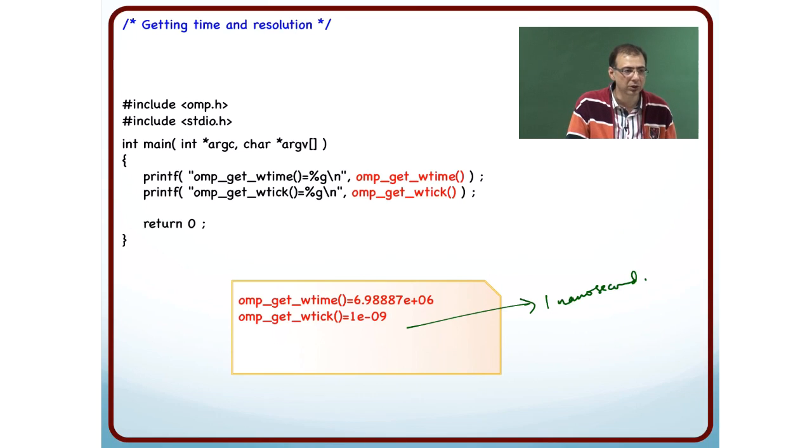Ideally, the resolution of your timer should be considerably smaller than the time it takes to execute that code. Otherwise, you are not going to get accurate results.